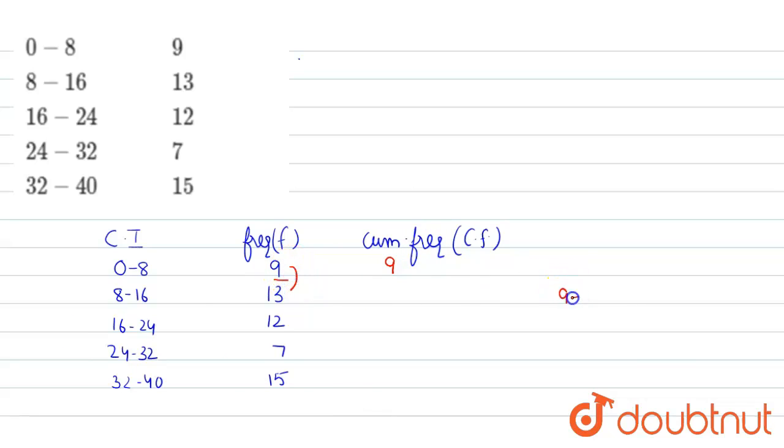Now for third cumulative frequency, add next frequency to sum of cumulative frequency. That means 22 plus 12, that is 34.